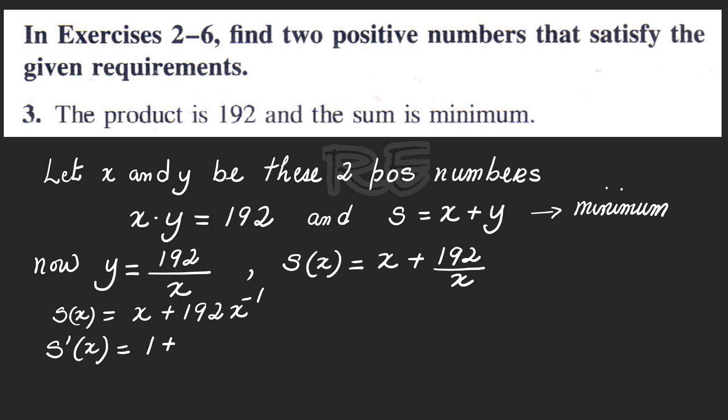S prime of x will be the derivative of x, which is one, plus the derivative of 192 x to the negative one, which is negative one times 192 times x to the negative two.